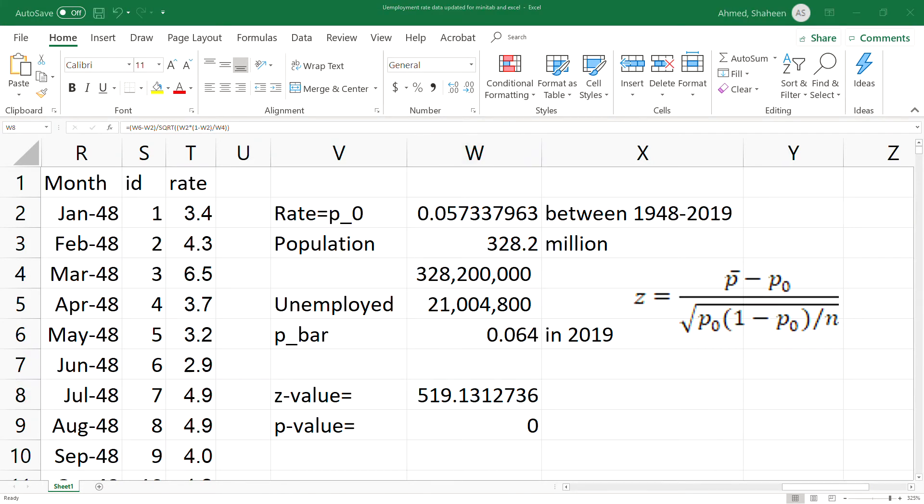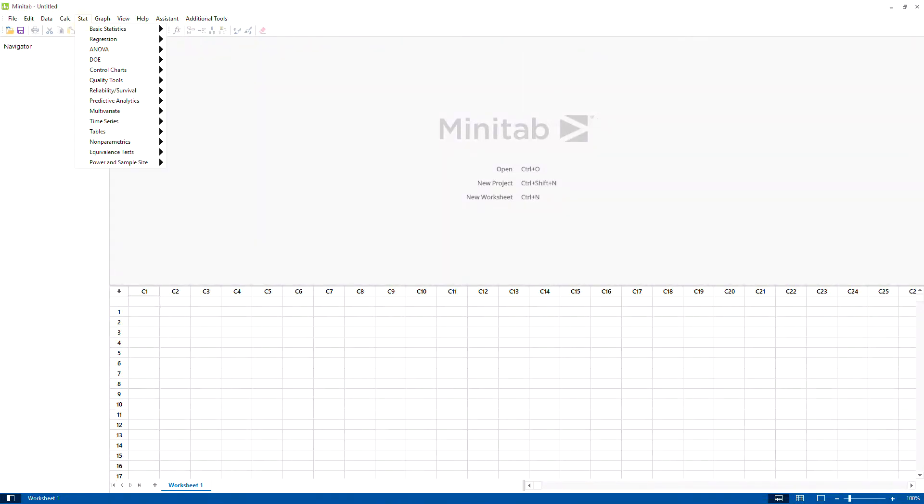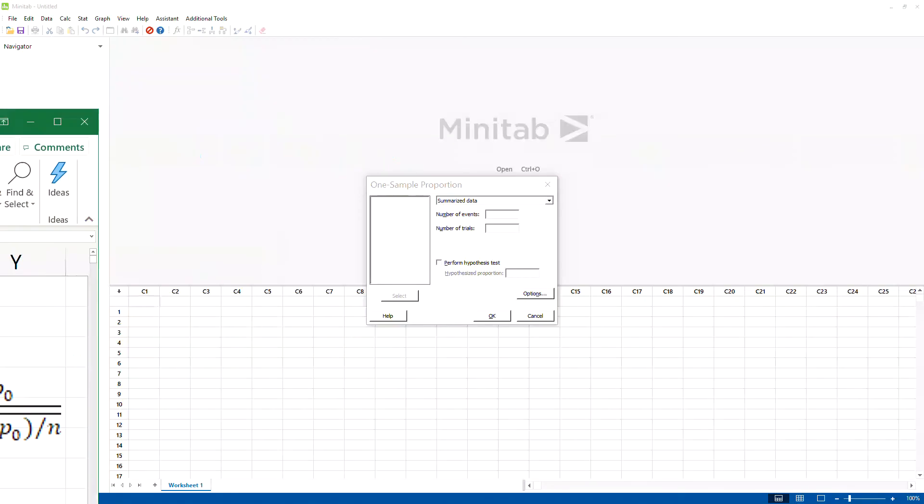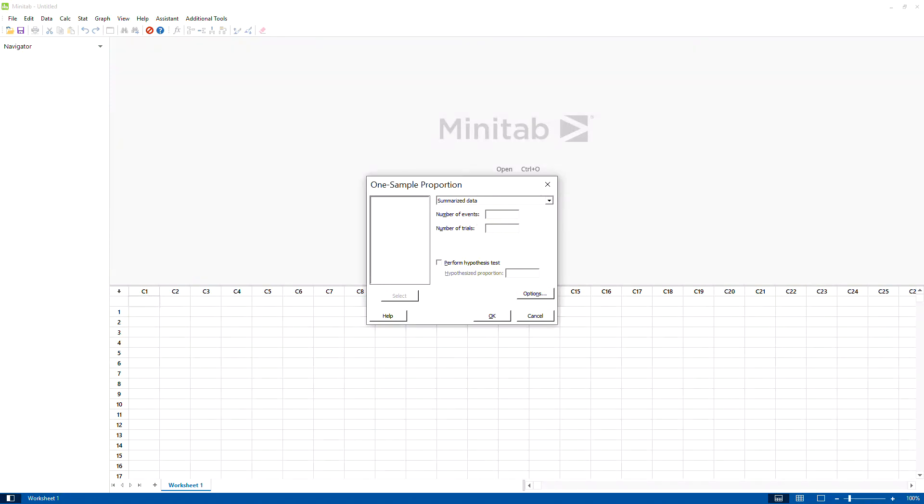Let me show you how to do it in Minitab. Here is Minitab: Stat, Basic Stat, Proportion Test. I have the summary data. Let me move my Excel file to this side. The number of events: I'm going to copy and paste so I don't make any mistake. So this many people are observed to be unemployed. It doesn't take commas, so number of trials was the total population. Remove the commas and we're performing a hypothesis which is the historic unemployment rate between 1948 and 2019.